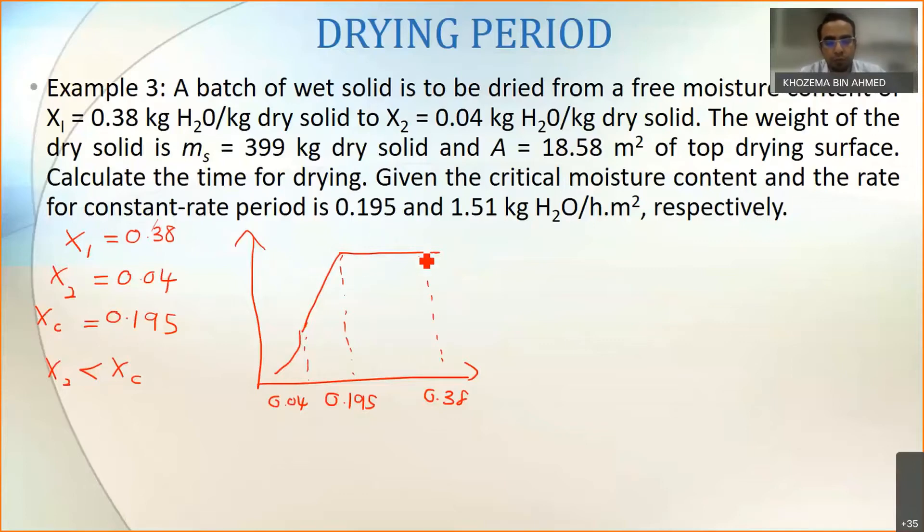So you can clearly see here that you have two different types of drying. From X1 until Xc we have the constant rate drying, and then from Xc until X2 you have your falling rate drying.